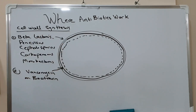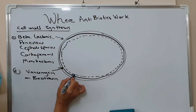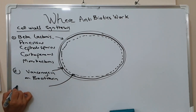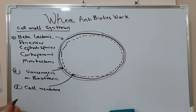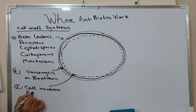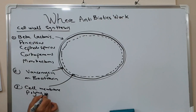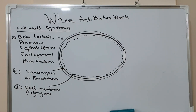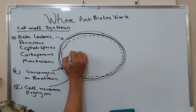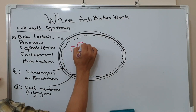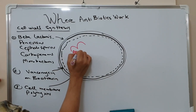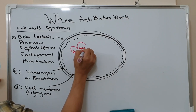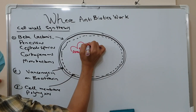The third group works on the cell membrane of the bacteria, and this includes polymyxins. The second major group of antibiotics works on nucleic acid synthesis, and this may include some antibiotics that work on folate synthesis and some that